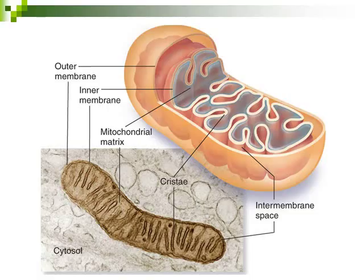Mitochondria have two membrane layers. They have an outer membrane that's smooth and on the outside. The second membrane is called the inner membrane. Inside the inner membrane, there's a space called the matrix. These different parts are going to become more important when we look at cellular respiration and where it actually occurs.